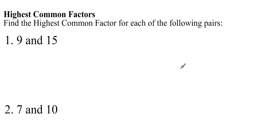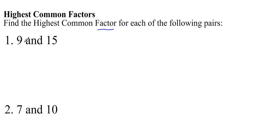I'm going to start off using one method, which is usually the first method that students learn in school for how to find the highest common factor and the lowest common multiple, which is to make a list. In doing these two examples, I'm also going to highlight the meaning of some of those words from the title page. First of all, we're looking at highest common factors. The word factor, when dealing with whole numbers, is a number that goes exactly into another number. So in the example here, 9 and 15, the factors of 9 are the numbers that go exactly into 9.